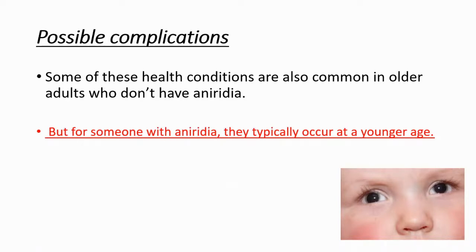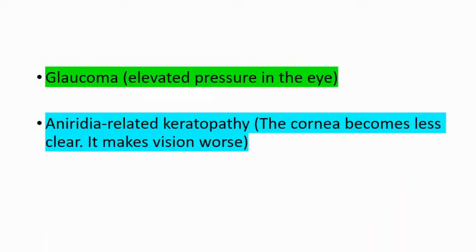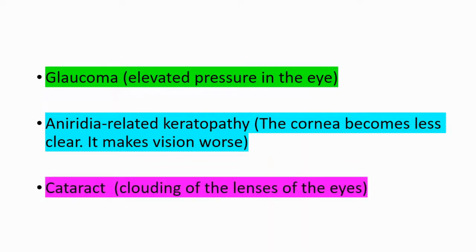What are those complications? First, glaucoma — which means elevated pressure in the eye. Also, aniridia-related keratopathy, which causes the cornea to become less clear and makes vision worse. And cataract, which means clouding of the lenses of the eyes.